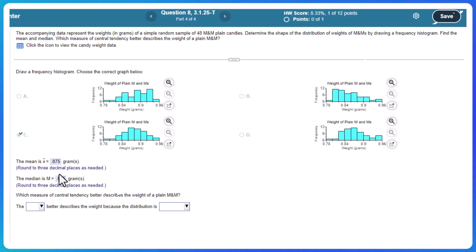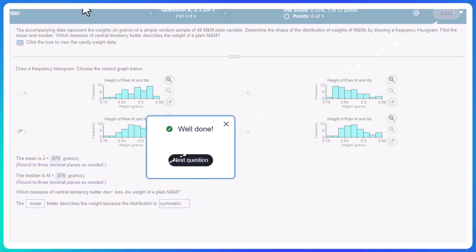So when these measures are close together, it's an indication that the distribution is symmetric. So which measure of center best describes the weight? Well, they're both the same. But in general, we want to use the mean when the distribution is symmetric. If it were skewed left or skewed right, we would use the median. Or if it has outliers, we'd use the median. So I hope that helps.